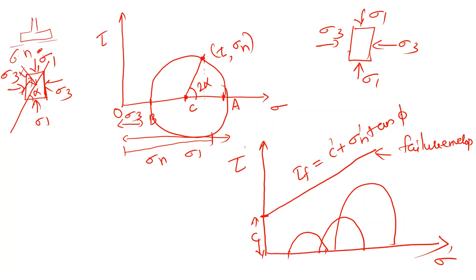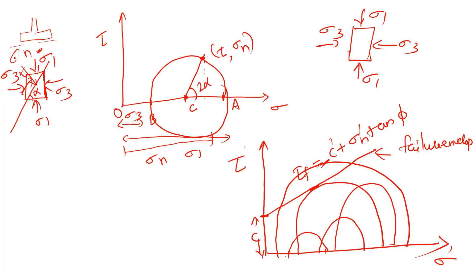If you increase the stress value at a particular point, you will touch that point — you will touch the failure envelope. You will reach the maximum limit — the stress value at a particular element where shear strength meets the limit. We draw the Mohr circle, test the shear strength in the lab on the same sample, test under normal stress, and draw the Mohr circle at failure.